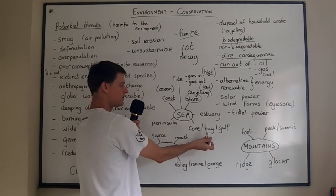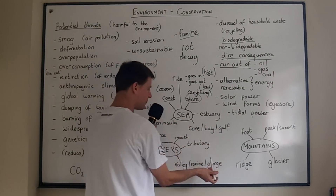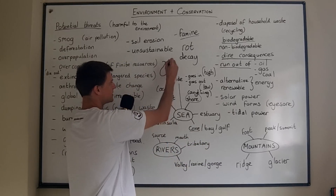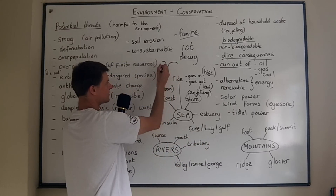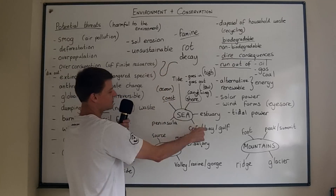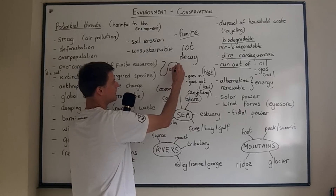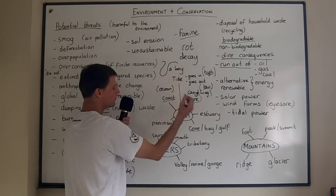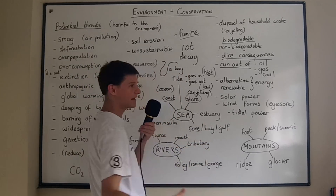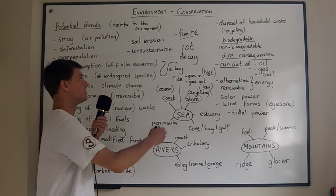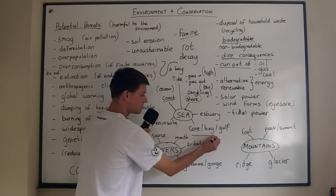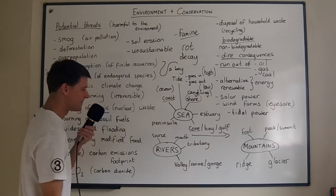We also talk about a cove, a bay, or a gulf. A cove is a small part of water that curves into the land. A slightly bigger one is called a bay, and a very large one — like the Gulf of Mexico — is called a gulf. So they're increasing in size: cove, bay, gulf.